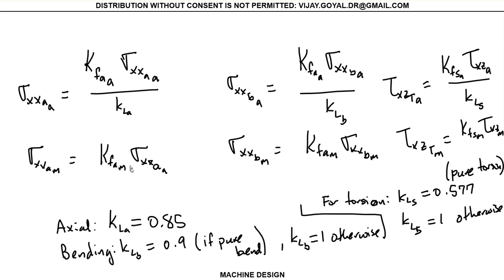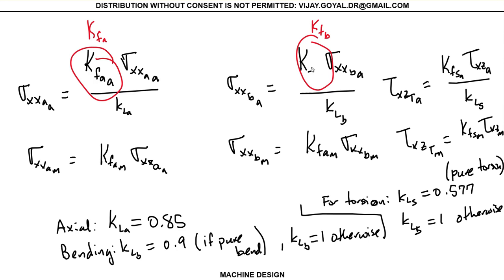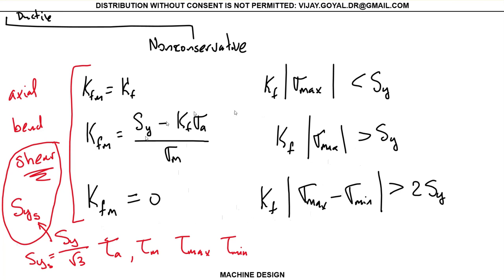To summarize: for alternate stresses, you use KFA, KFB, and KFS — these don't change. What mainly changes is the mean KFM values. If you're using the typical approach, they're all the same as the alternate. If you're using the conservative approach, KFM is all equal to 1 for the mean. If it's the non-conservative approach, you apply the Dolling rules we discussed.